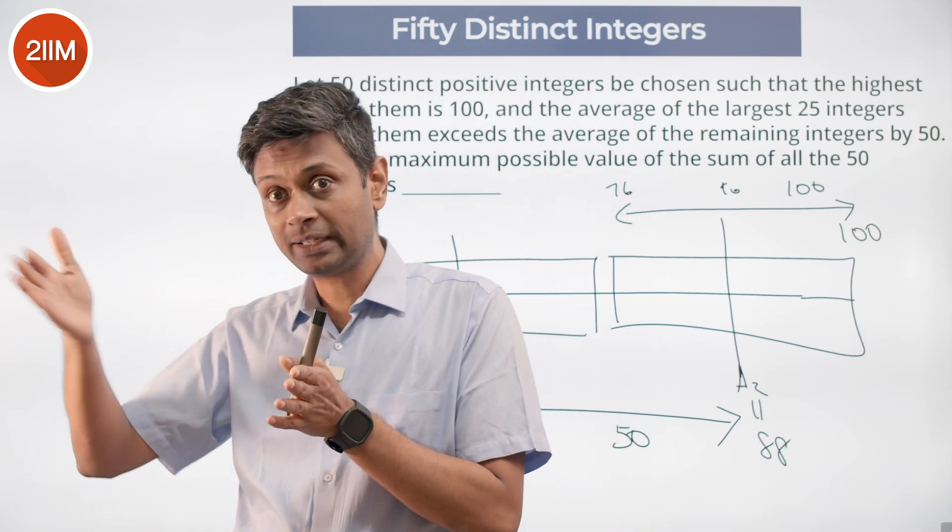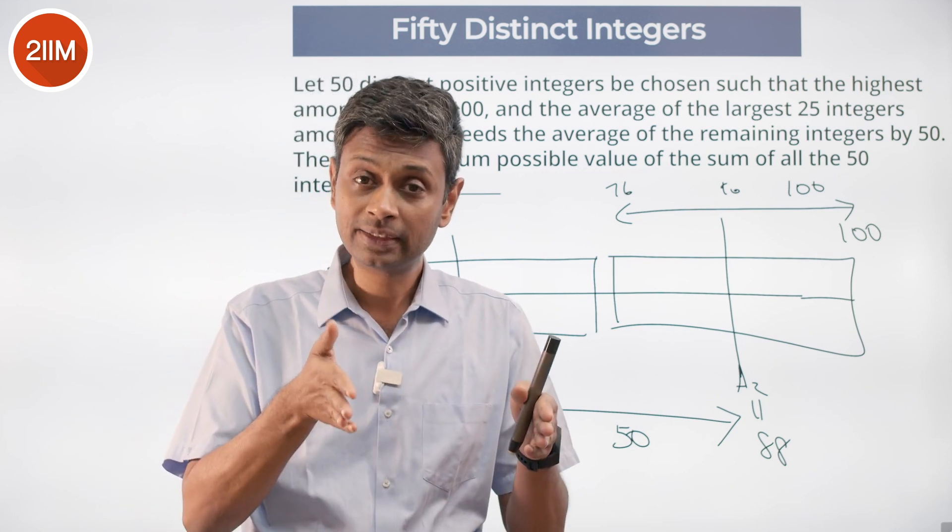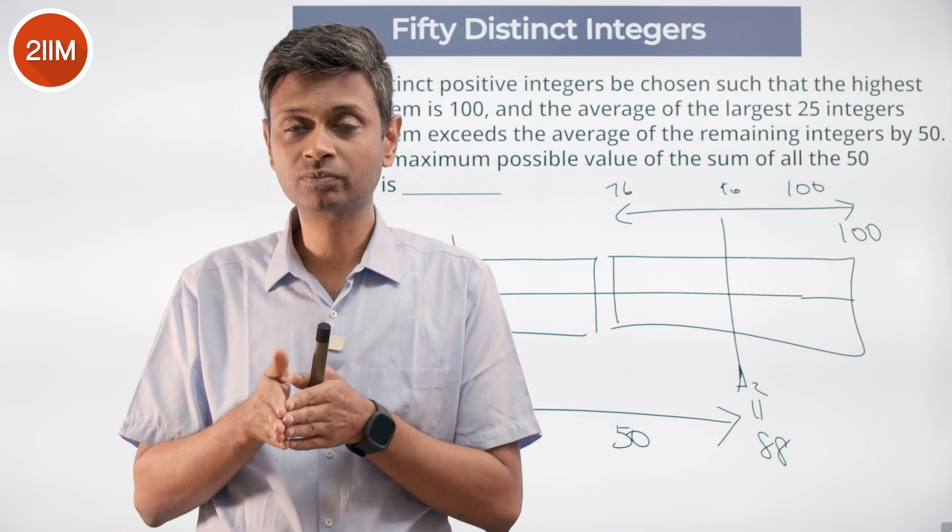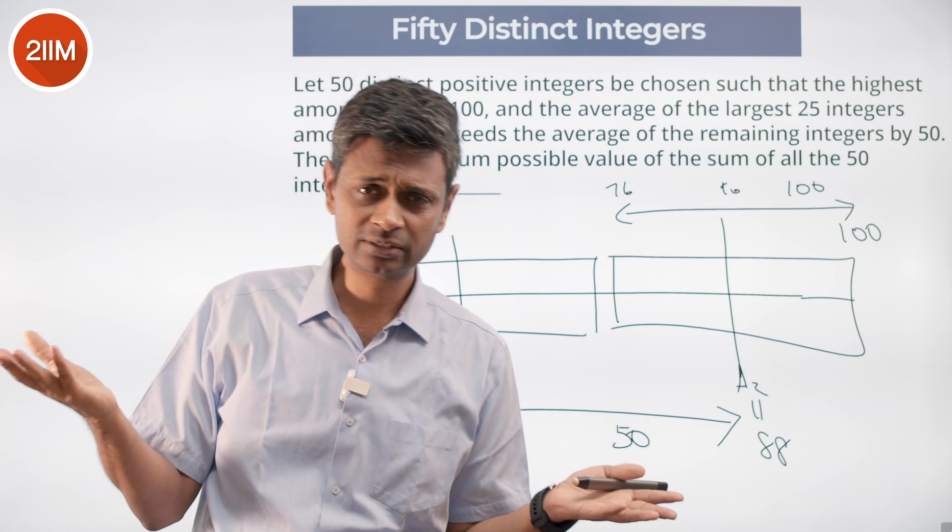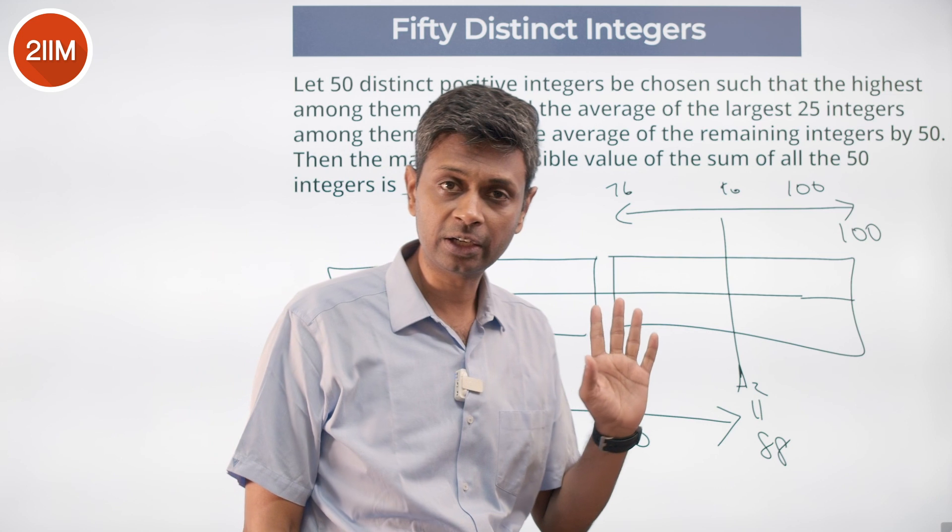Beyond 88, 89 to 100, 12 numbers. Before 88, 87 to 76, 12 numbers. 88 is the middle term, that's where the average will properly offset. This side slightly lesser, slightly lower, greater, lower, greater, lower, perfectly offsetting each other. Average will be 88.